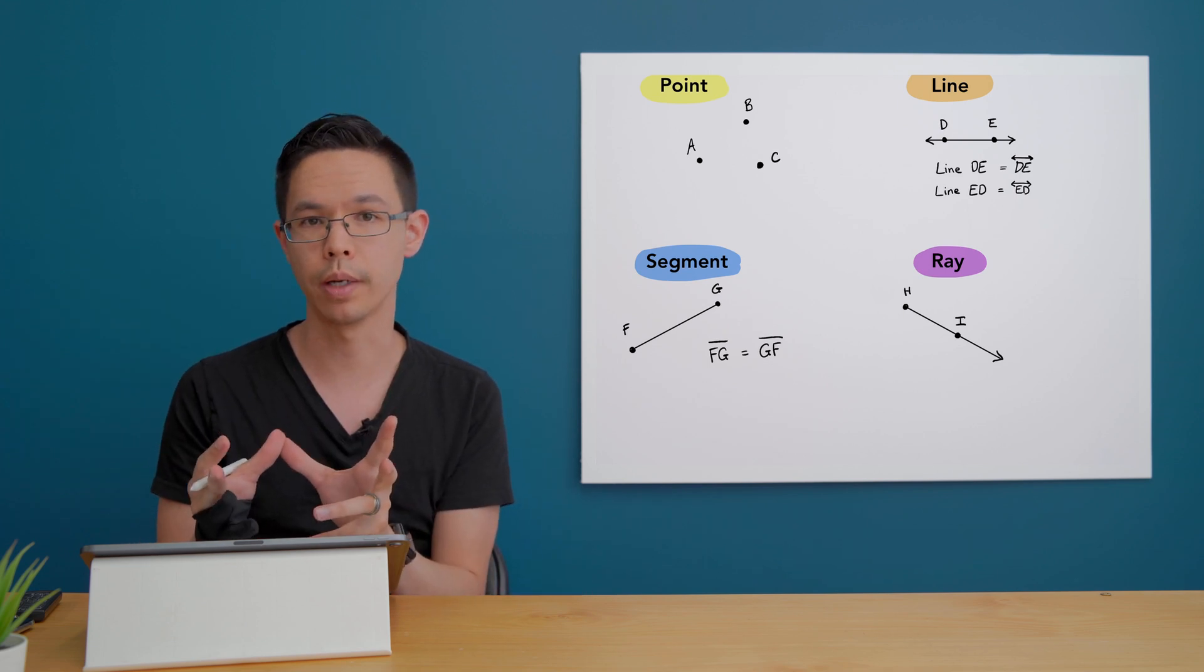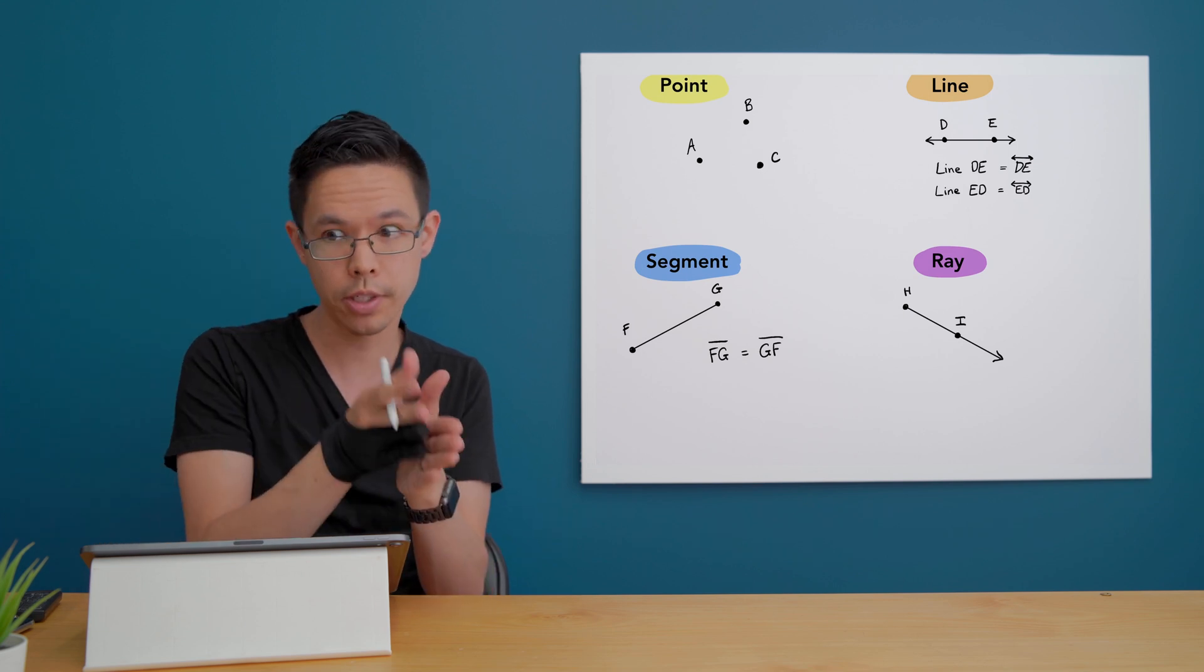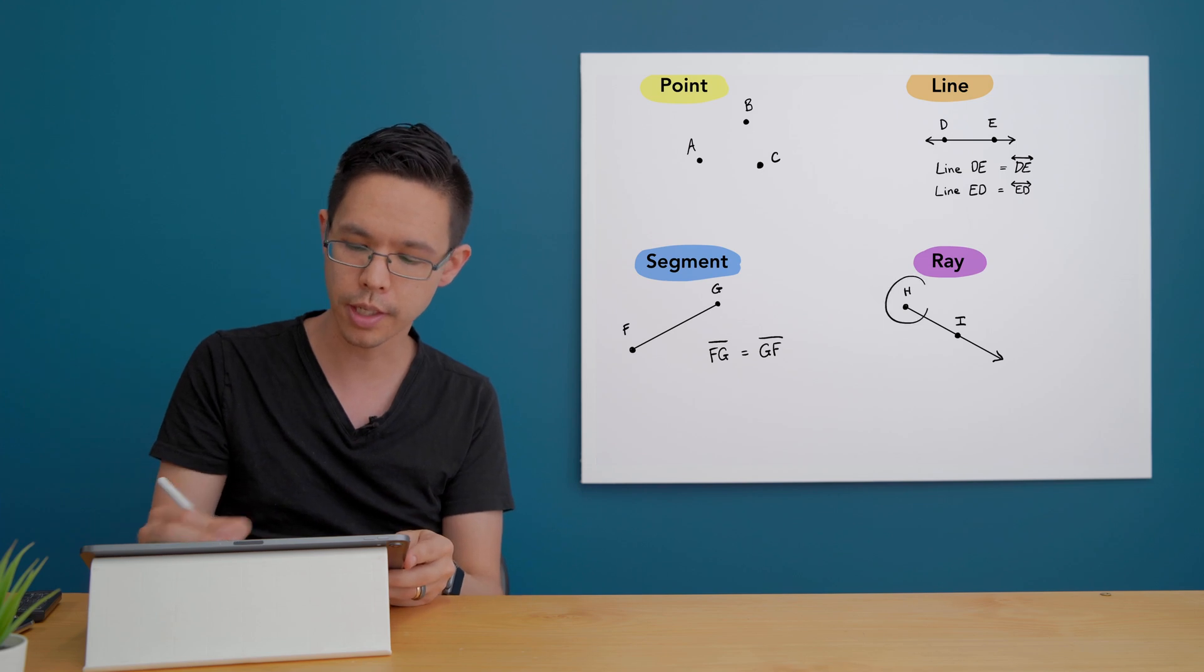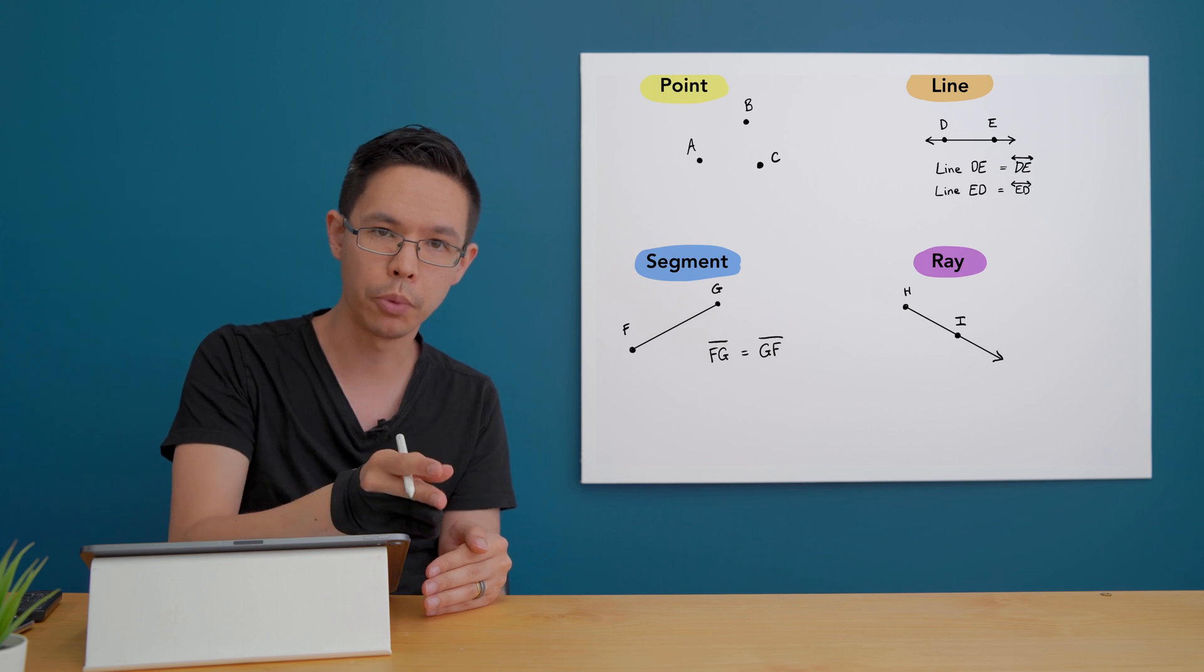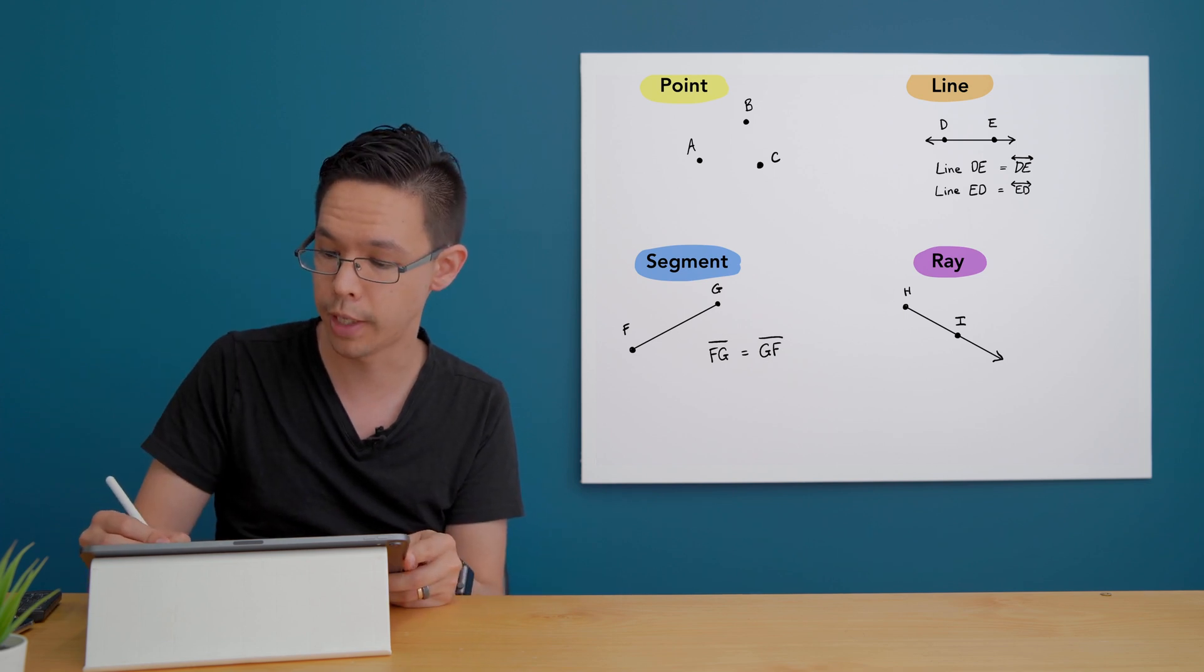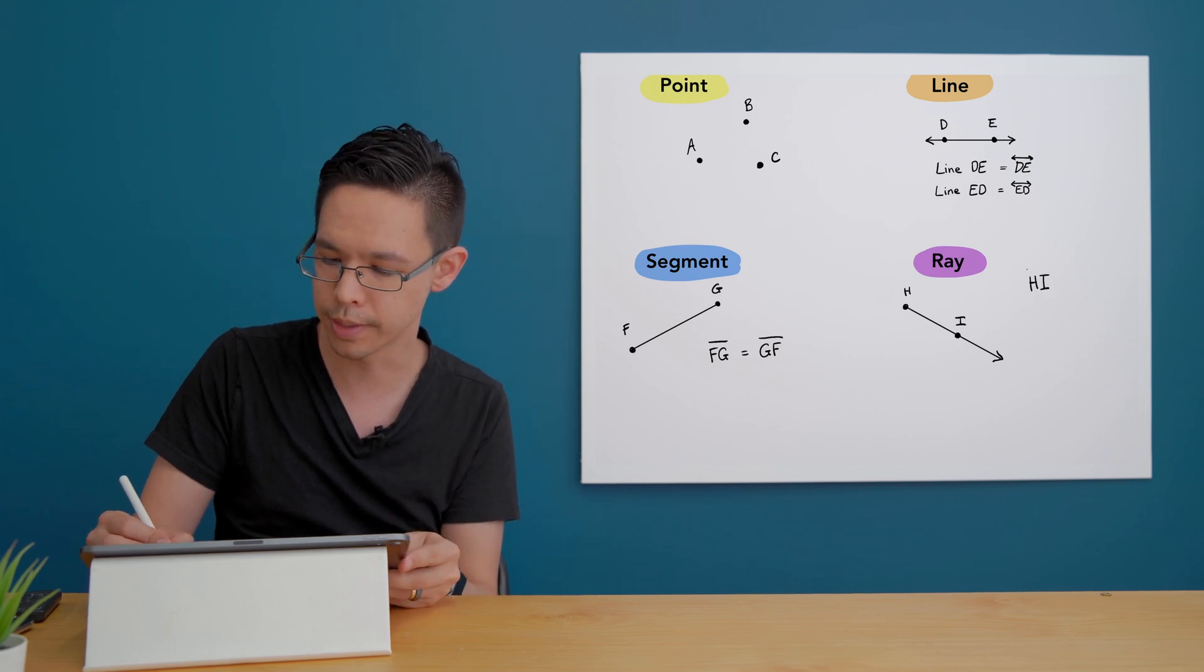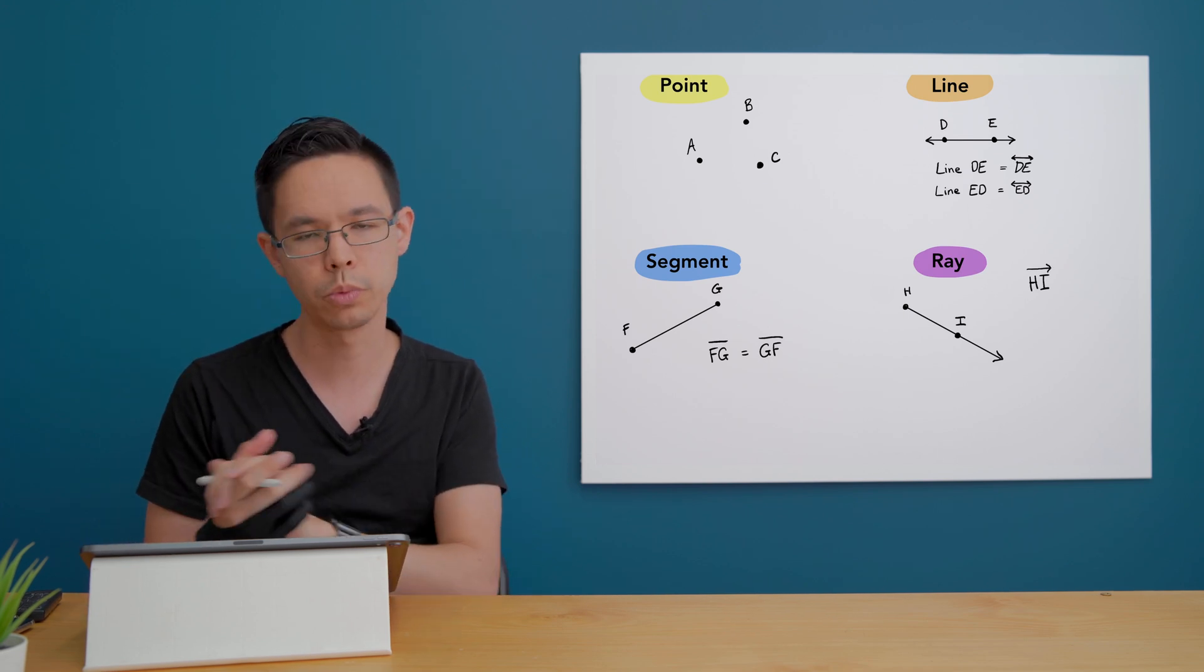When we label this one we have to be very careful with the sequence that we mention the letters. We have to start from the starting point, the origin. So I would call this the ray from point H through point I and the icon I'm going to use this time is a line with an arrowhead indicating that it's going towards point I.